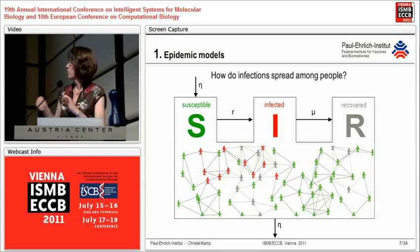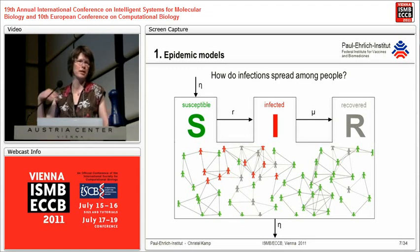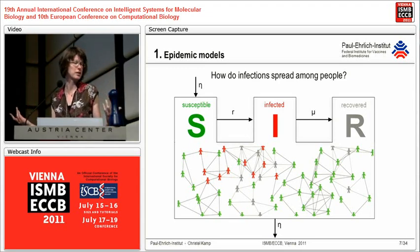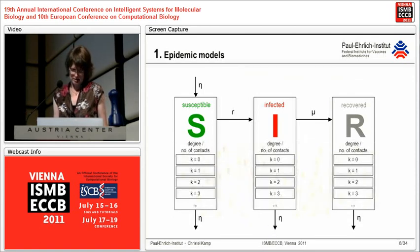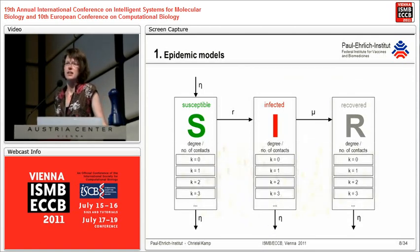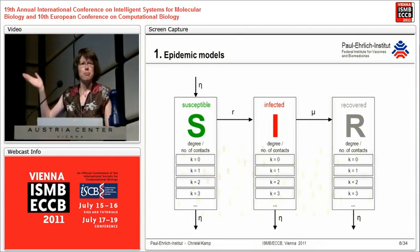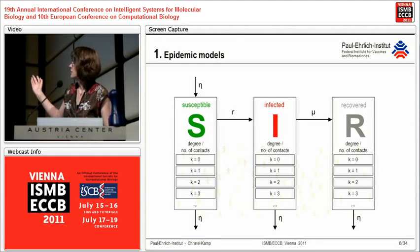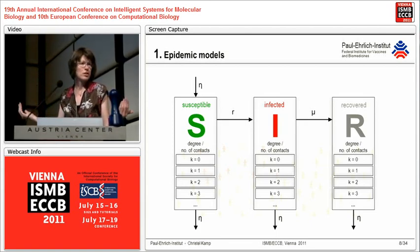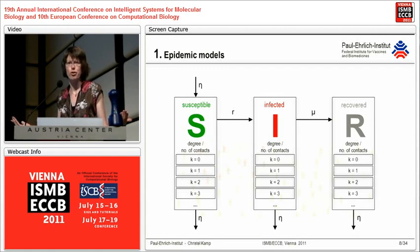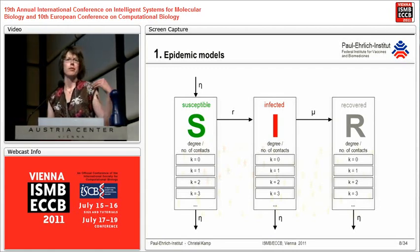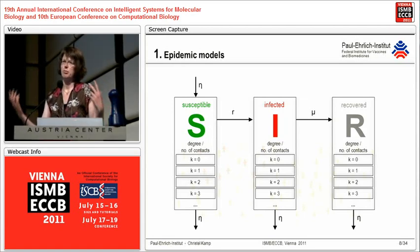There are complex networks along which we make contacts, and these contacts may vary depending on the disease — social contacts for the flu or sexual contacts for sexually transmitted diseases — but still it's not just a random mixture. One way to handle this, and the easiest way, is a configuration-type model. What you basically do is further subdivide your groups of susceptible, infected, and recovered persons into groups according to the number of contacts they have along which transmission can possibly occur.